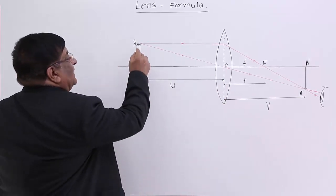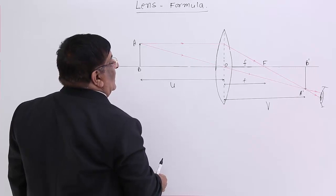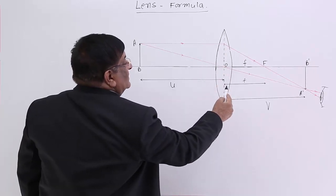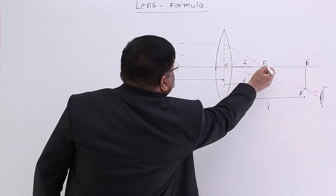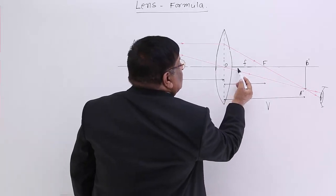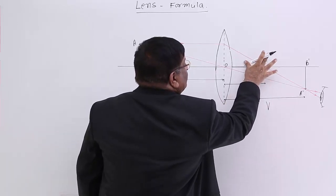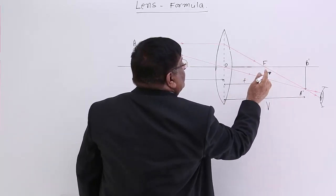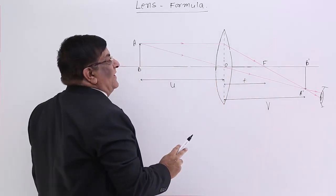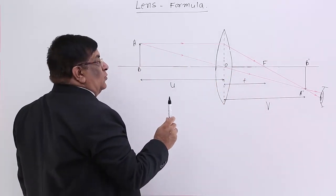Here AB is the object and this is the lens. This is the principal focus, so this distance is the focal length. To form the image we apply the rules of refraction.